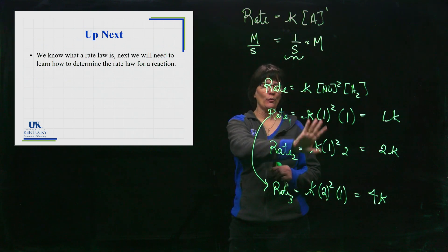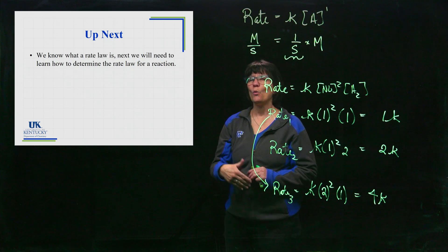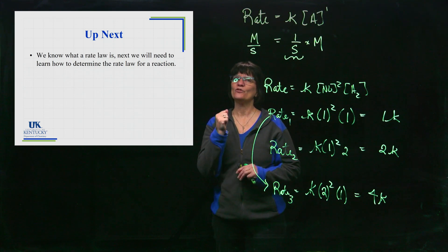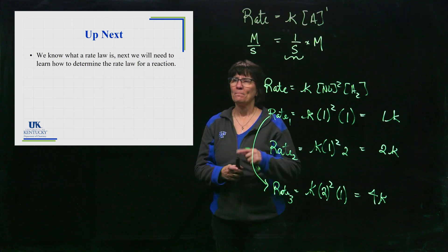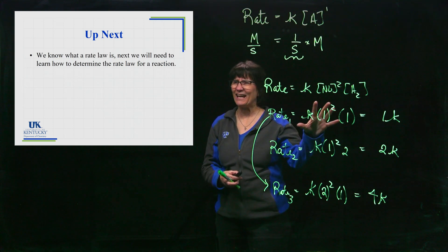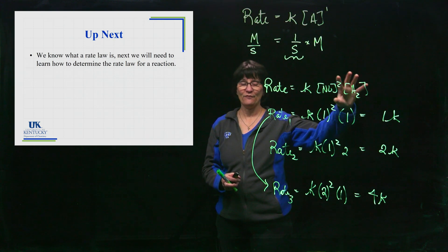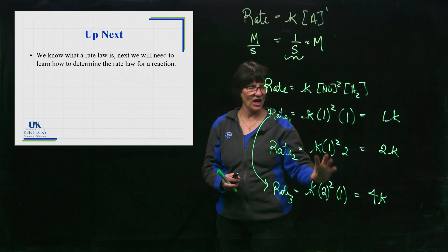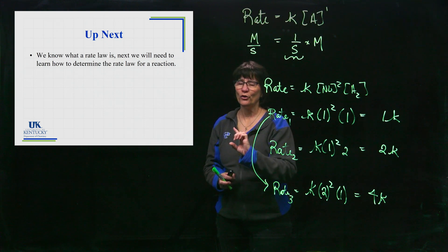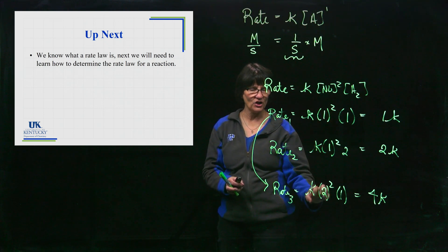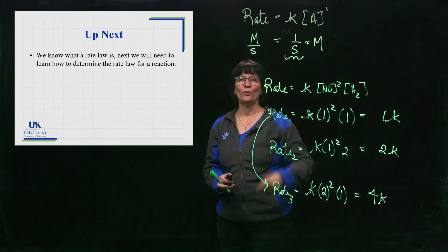So we now know what a rate law is and how it affects the rate of the reaction. What we need to do next is learn how to take experimental data and come up with a rate law. It's the opposite of what we did here — here we knew the rate law and saw how changing concentration affects rate; next we'll see how concentration affects rate and from that determine the rate law.